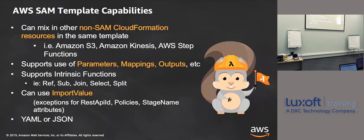I can use the SAM template to build production with different parameters. I can use the same template over and over. Mappings are lookups — where I would use that is: if I'm in this region, use this endpoint. Outputs are the ability to output values when you build one architecture; I can output a name like a user pool ID, build my whole security setup, and it can be used by multiple applications. Then I can build another application and grab that data from the other stack — it allows you to pass data across stacks. All of that works in SAM just like CloudFormation, as well as intrinsic functions like ref, sub, join, select, and split. Import value is what works with the outputs. And then it's YAML or JSON.